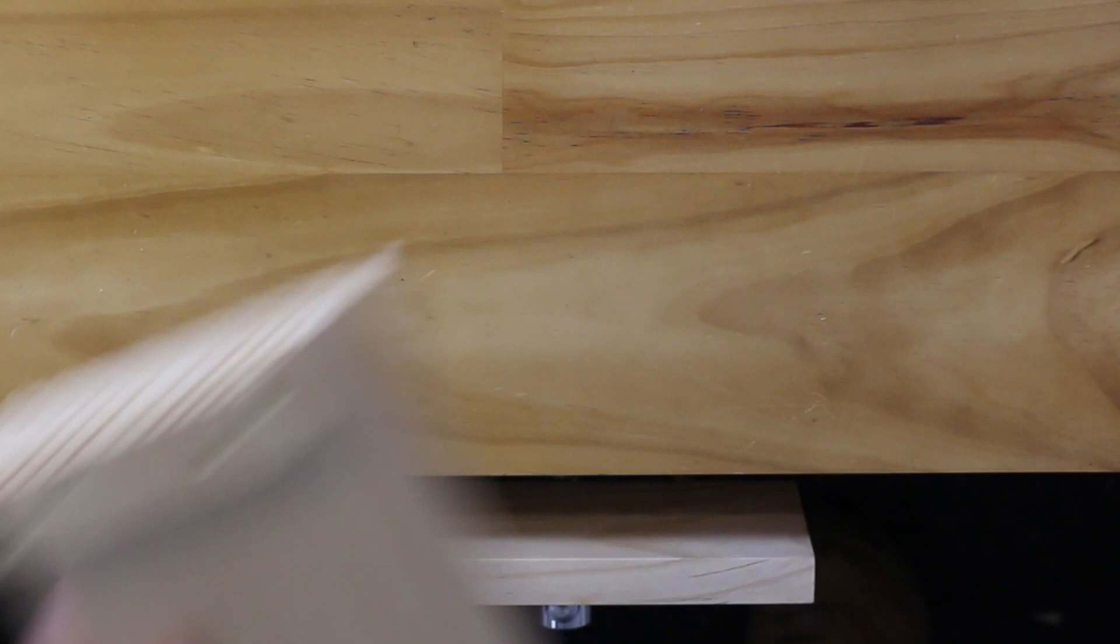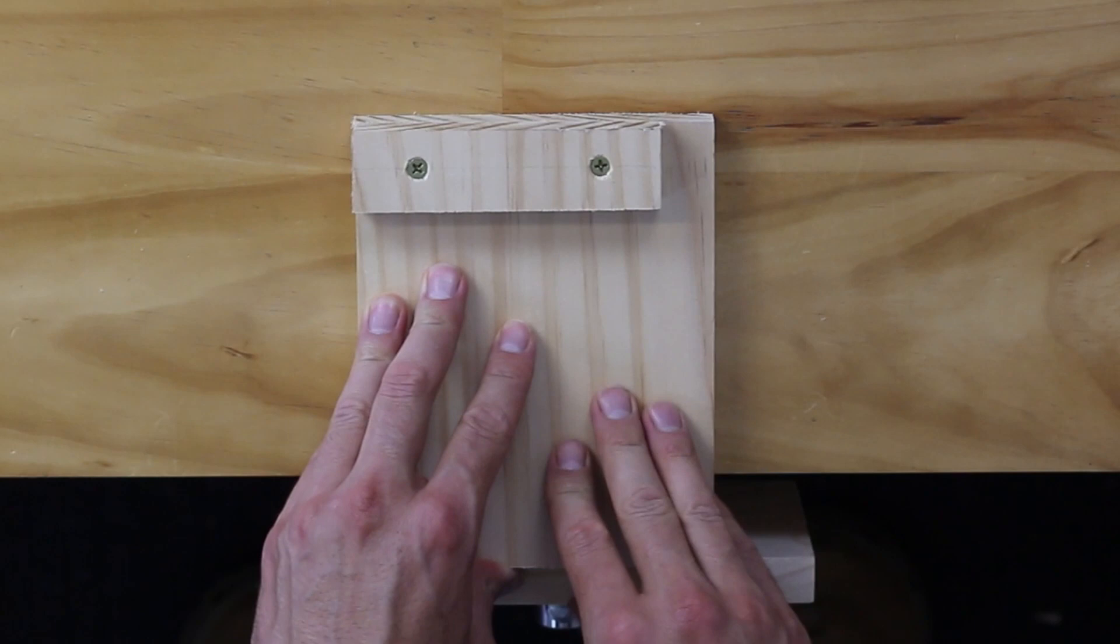I will now install an existing bench hook into a vise. We will use this to support the timber whilst cutting. If you do not have a bench hook, then you can clamp your timber off the edge of your bench.